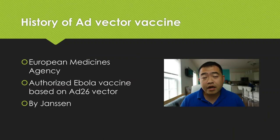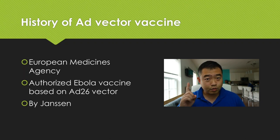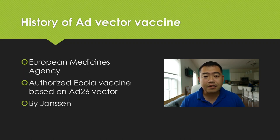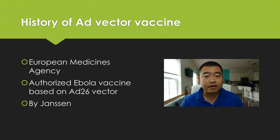So what is the history of adenovirus vector vaccines? Currently there is just one adenovirus vector vaccine that has been approved by the European Medicines Agency. This vaccine is authorized to prevent Ebola disease, and it uses the same technology — the AD26 vector — by the same company, Janssen's.